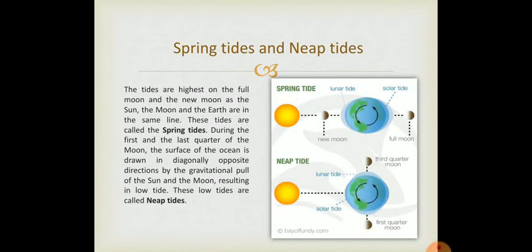Now we will study about the spring tides and the neap tides. What is this? As we already studied, it occurs twice a day. They occur at a regular interval of time. The tides are highest on full moon and the new moon as the sun, the moon and the earth are in the same line. See children, in this picture you can see the new moon as the sun, the earth and the moon. These are in the same line. When these are in the same line then these tides are known as spring tides and it causes the highest tides during this spring tides.